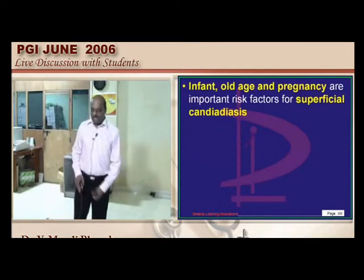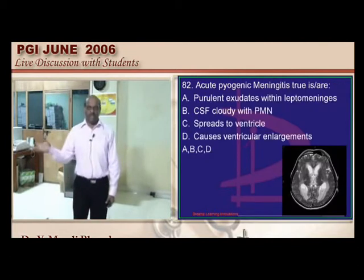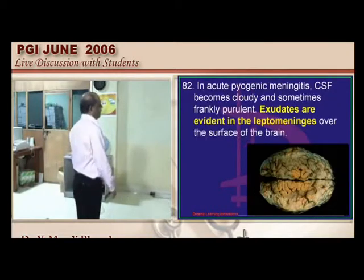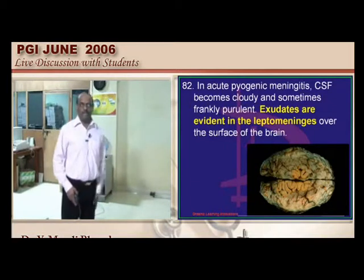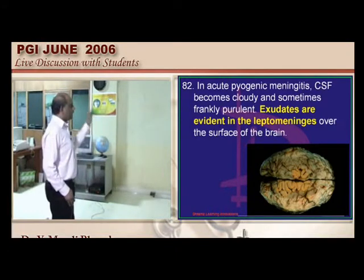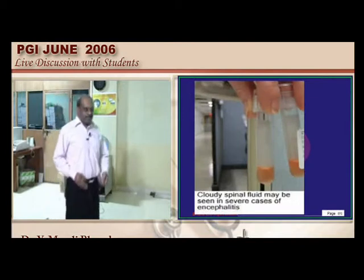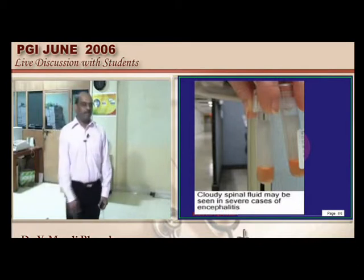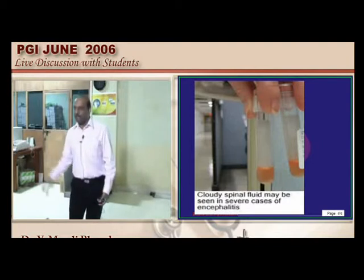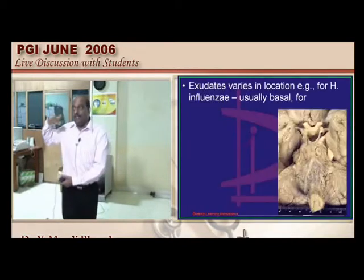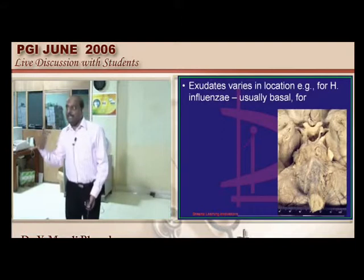Acute pyogenic meningitis: CSF becomes cloudy with exudates evident on the leptomeninges. Basal meningitis — caused by tuberculosis or H. influenzae — is concerning because all lower cranial nerves exit at the base, including the 8th nerve. If the 8th nerve is involved by exudates, deafness occurs. Any child recovering from H. influenzae meningitis must be evaluated for hearing loss.